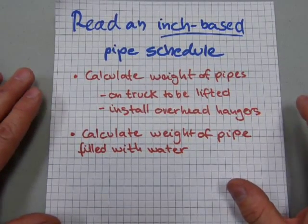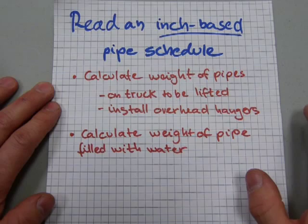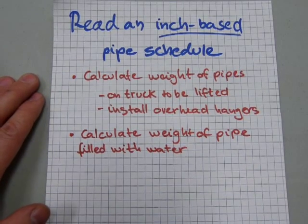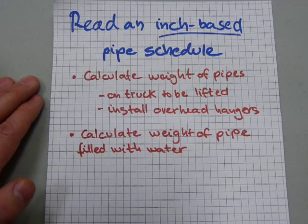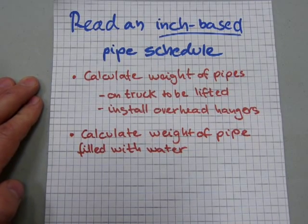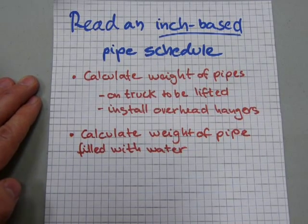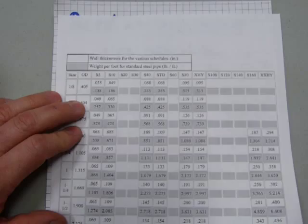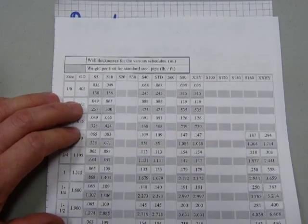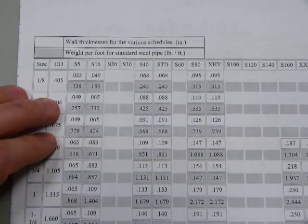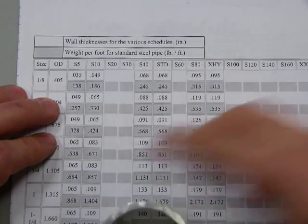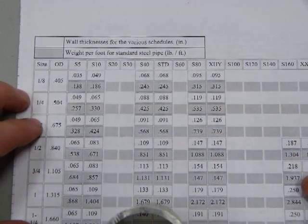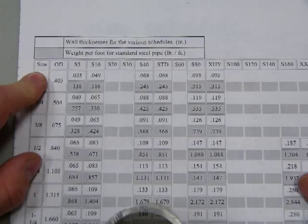Manufacturers make these pipe schedules and they adhere to standards. Manufacturers are not at liberty to make any size of pipe they feel like. Let's look at a standard pipe schedule here from a manufacturer — this is just my paper weight here — and let's look at the data in it.